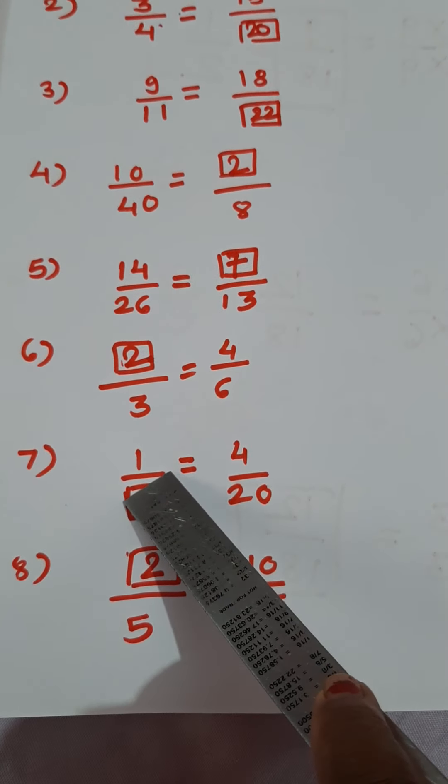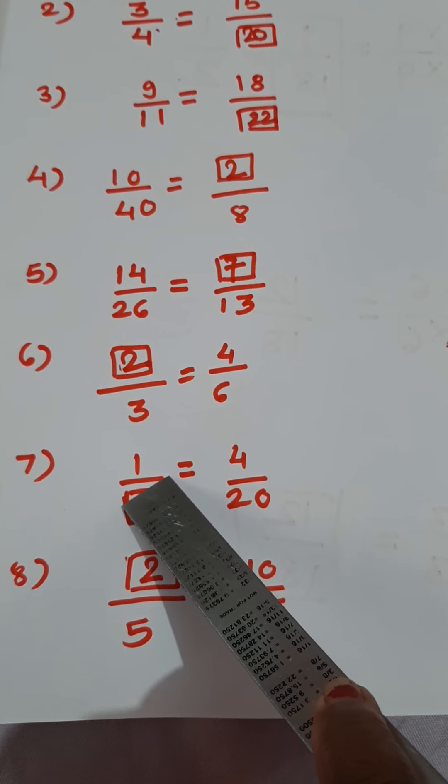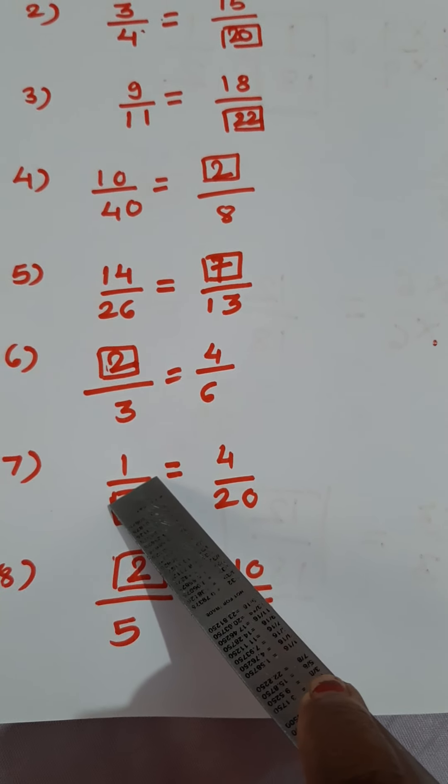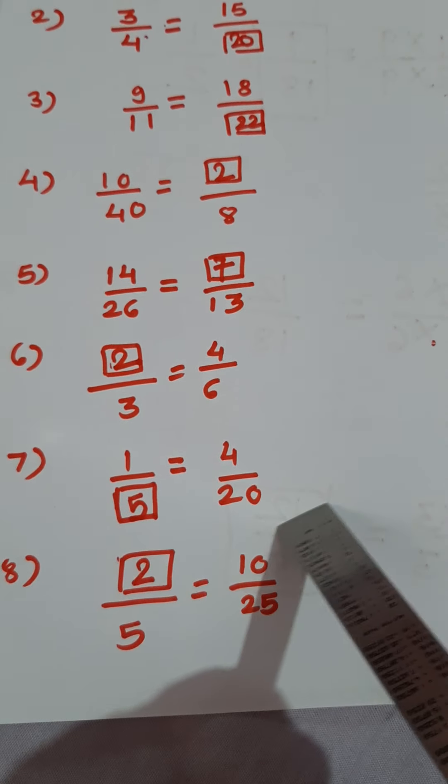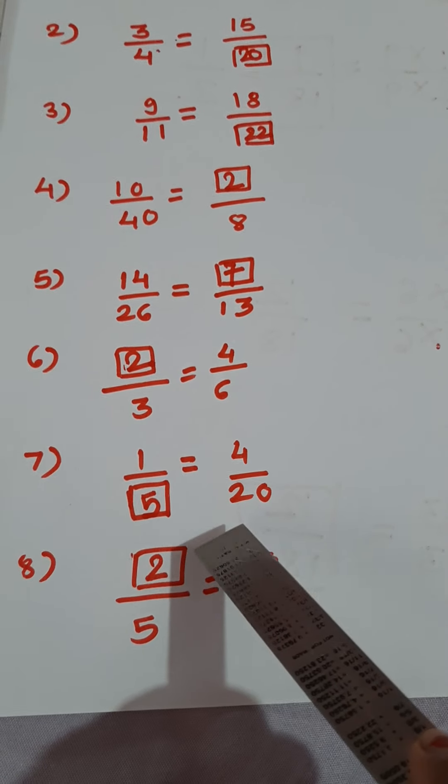Next one, 1 upon dash is equal to 4 upon 20. 1 4's are 4. So how many 4's are 20? 5 4's are 20.